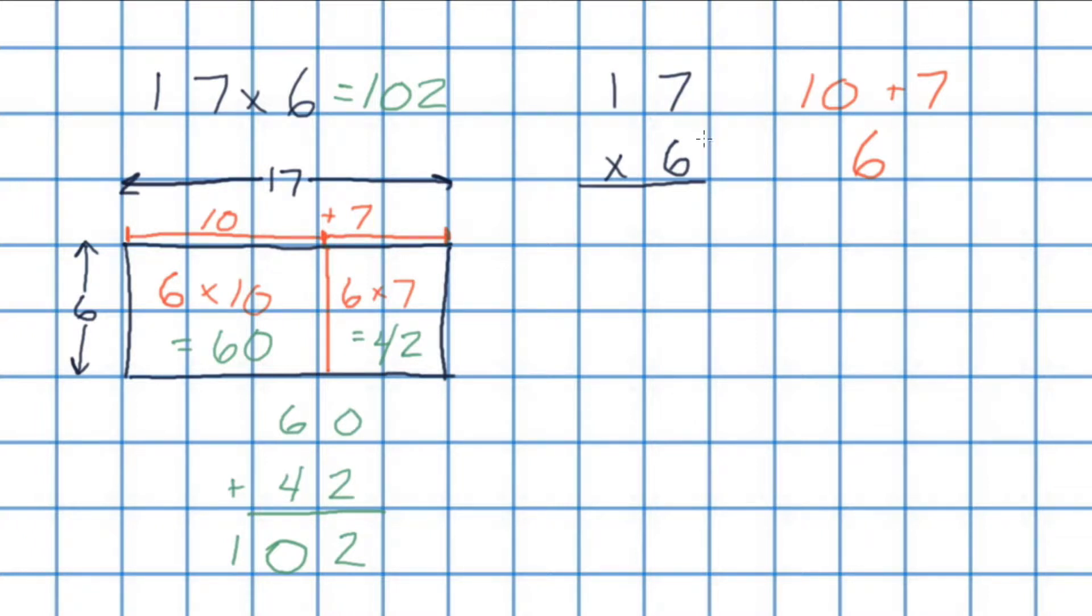When we multiply using partial products, we always start with this number down here in the bottom right. So I just circled it just so we remember that this is our starting place. So we'll start by multiplying 6 by 7. I'm just going to write that off to the side here just to keep track of what we've done. So 6 multiplied by 7 is equal to 42. Now I can multiply 6 not by 1 and not by 17. I'm multiplying 6 by 10. So again, this is why it helps to write these out on the side here just to identify what our parts are that we need to multiply. So 6 multiplied by 10 is equal to 60.